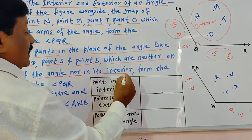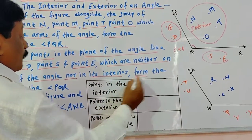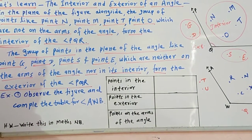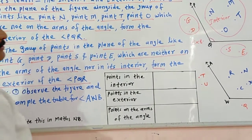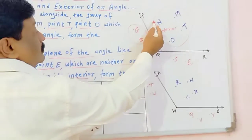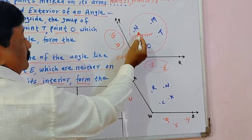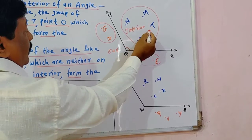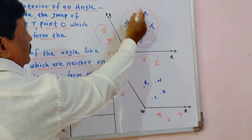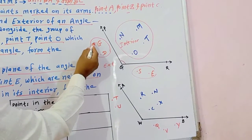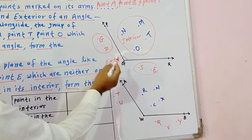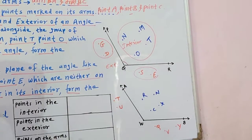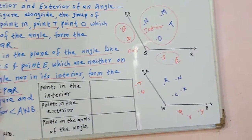The group of points in the interior form the interior of the angle PQR, and the group of points outside form the exterior of angle PQR. To clarify: points O and D are in the interior, while points G, S, and E are in the exterior of the angle.